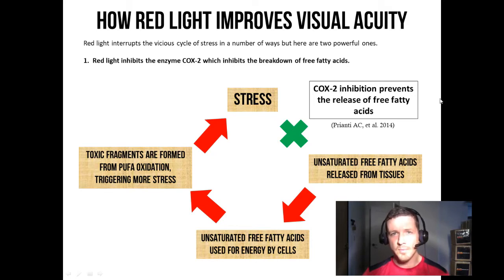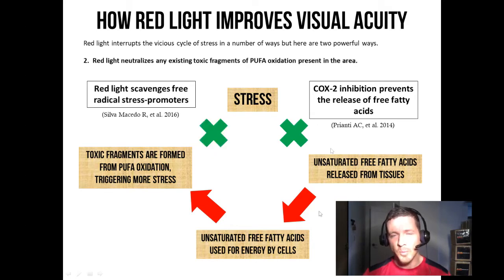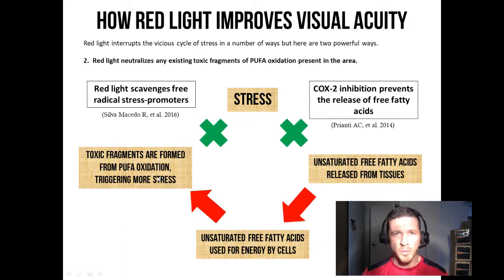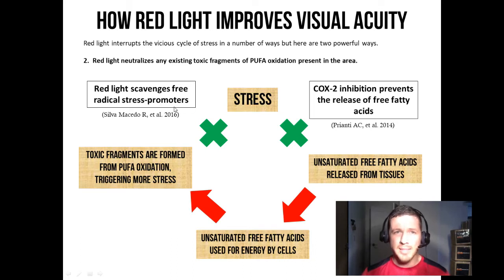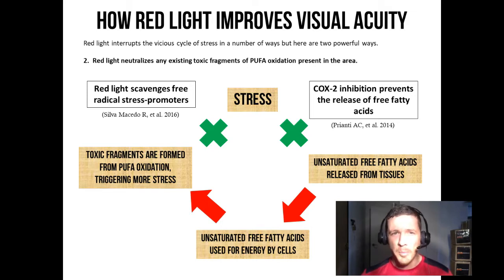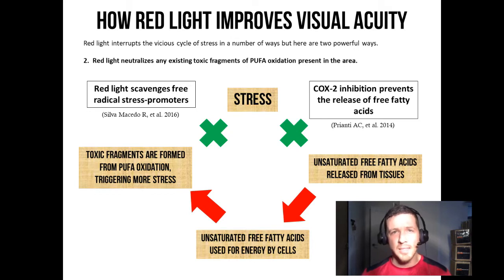But there's more. When you apply red light, there are likely lots of toxic fragments from prior oxidation in the area that need to be cleaned up. Red light is a potent antioxidant, so it scavenges these free radical stress promoters. This is how red light therapy can benefit the eyes — these are the two primary mechanisms behind why red light therapy is so beneficial for so many different eye conditions.